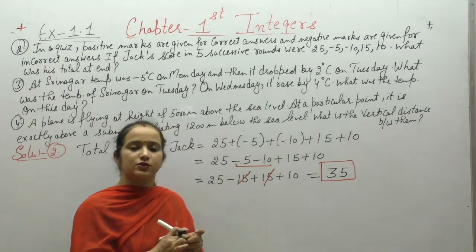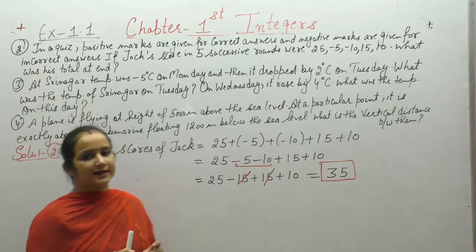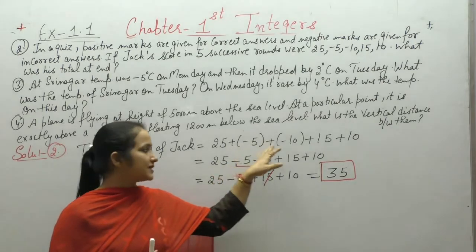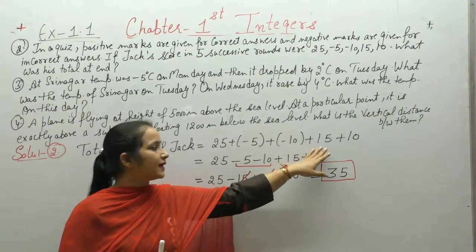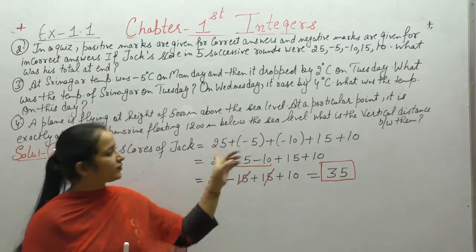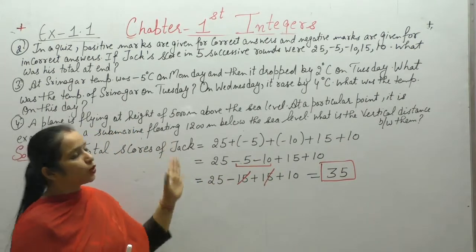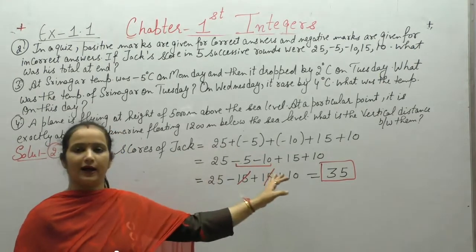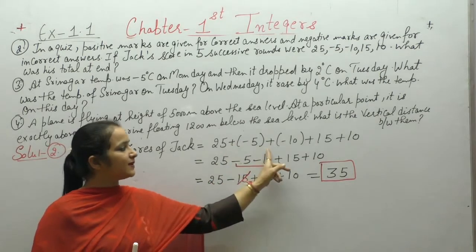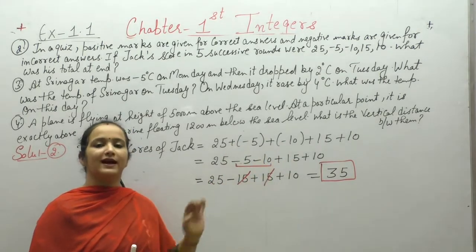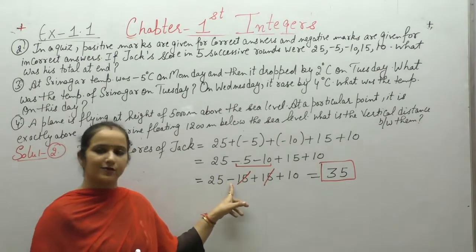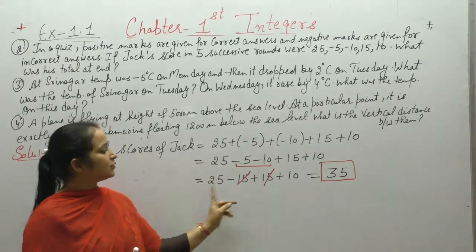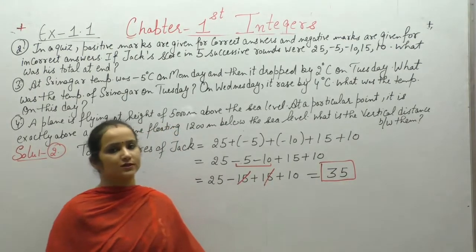Clear? We are given scores for 5 rounds. Negative marking applies for incorrect answers. 1st round: 25, 2nd round: minus 5, 3rd round: minus 10, 4th round: plus 15, 5th round: 10 marks. We need to find the total score across 5 rounds. We added all of them — plus minus is minus, plus minus is minus. The minus terms are added separately with a negative sign. Plus 15 and minus 15 cancel out. Both remaining terms are positive, giving a total score of 35.